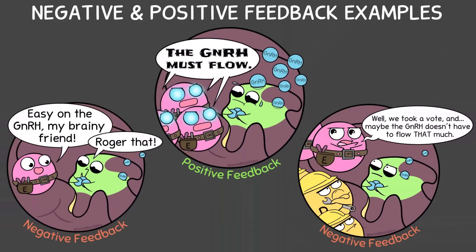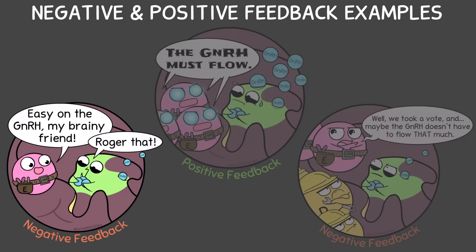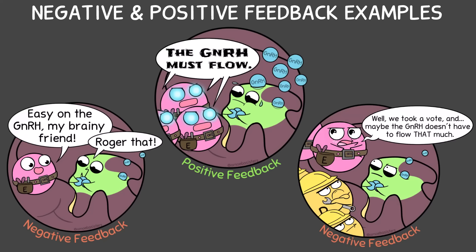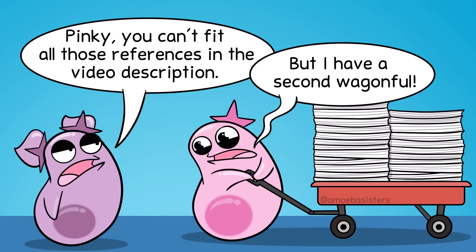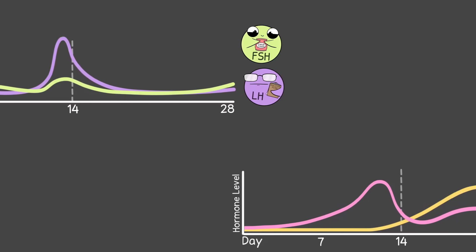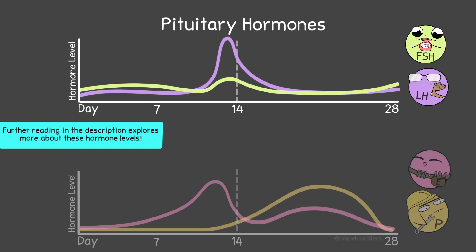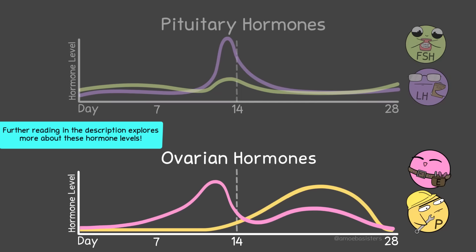Just a helpful note: if you do a rewatch of this hormonal control part of the video, you can catch negative and positive feedback examples. We had a negative feedback example in the early to mid follicular phase, and in the luteal phase after ovulation. We mentioned positive feedback happening in the late follicular phase. If you want more examples of negative or positive feedback mechanisms in this process, or more details to explore like how the dominant follicle is selected, check out our further reading in our description. One more helpful note is to see the big picture: a general chart showing general hormone levels throughout this example 28-day period. Here are the general levels of the pituitary hormones FSH and LH, and here are the general levels of ovarian hormones estradiol and progesterone.